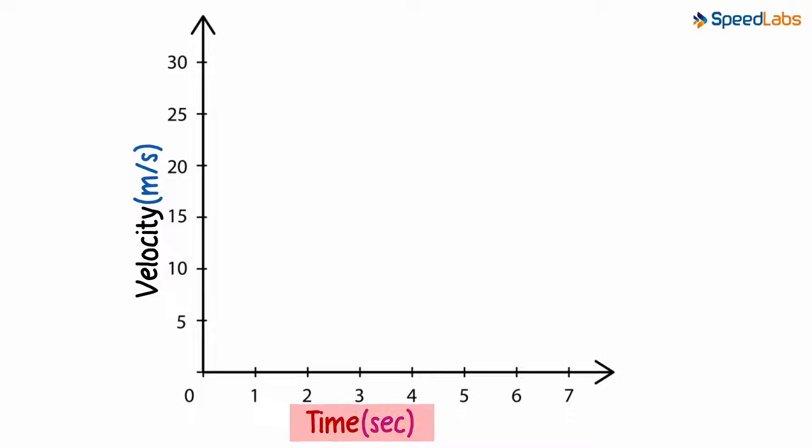Here, again we have a graph with time represented on the x-axis and the velocity represented on the y-axis. The car starts from a standstill and in a second reaches a velocity of 5 meters per second. In the next second, it reaches a velocity of 10 meters per second and then in another second, 15 meters per second and so on.